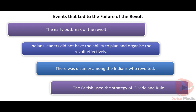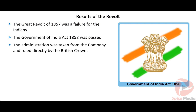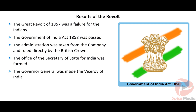Results of the revolt: The Great Revolt of 1857 was a failure for the Indians. The Government of India Act 1858 was passed, and the administration of India was taken away from the East India Company. India was now ruled directly by the British Crown. The office of the Secretary of State for India was formed, assisted by an Indian council of 15 members. The Governor General was made the Viceroy of India, representing the British Crown.